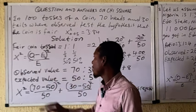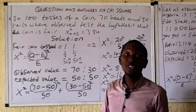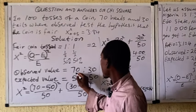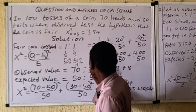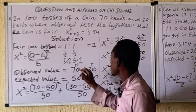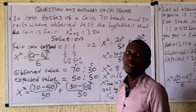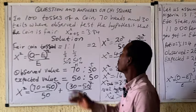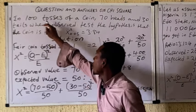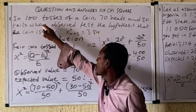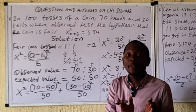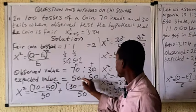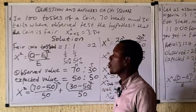The observed value is always given in the question. So we observed 70 heads and 30 tails. The expected value: since there's a 50% chance, half should be heads and half should be tails. So with 100 tosses, 50 are expected to be heads and 50 are expected to be tails. Expected value for heads is 50 and for tails is 50.